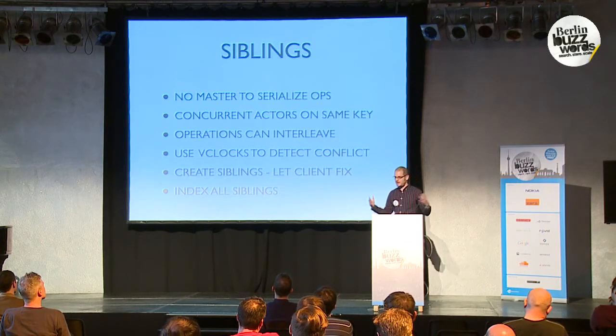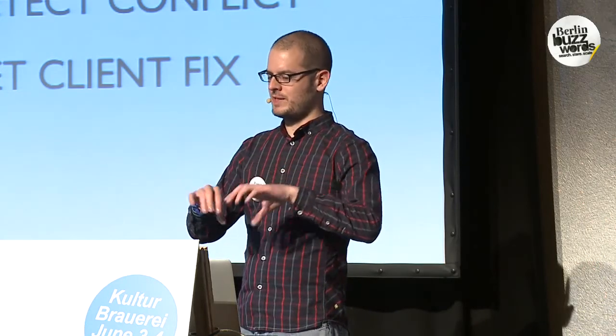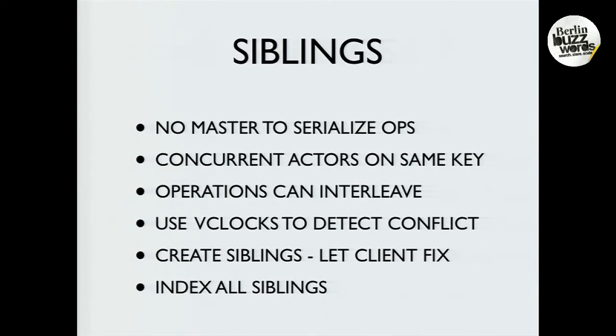React has a notion of siblings — there's no master to serialize operations, no serializability like you'd get in an ACID database. So you can have concurrent actors on the same key and those operations can interleave, leading to conflicts. What React does is use something called a vector clock — a fancy name for logical time — which allows you to notice that two writes did not follow from each other, meaning they're parallel versions. That allows you to detect a conflict and store both values to later return to the client so they can merge it — similar to when two people modify the same file in Git and you have to resolve conflicts. Yokozuna will index all the siblings, so when you query, if it matches on any of them, you'll get the key back.